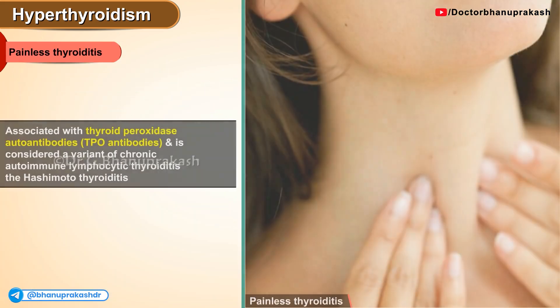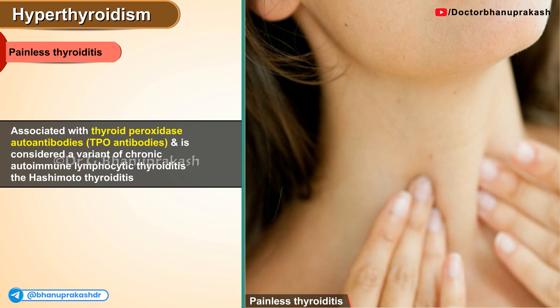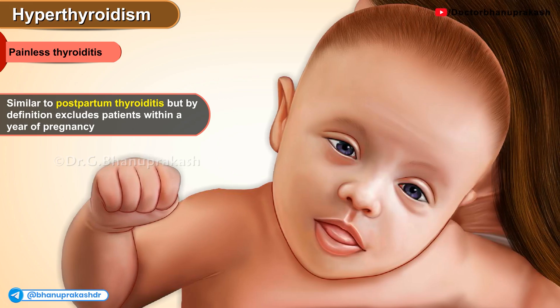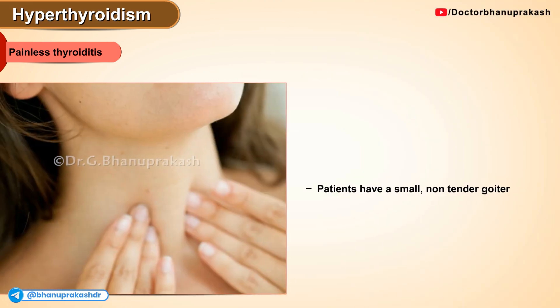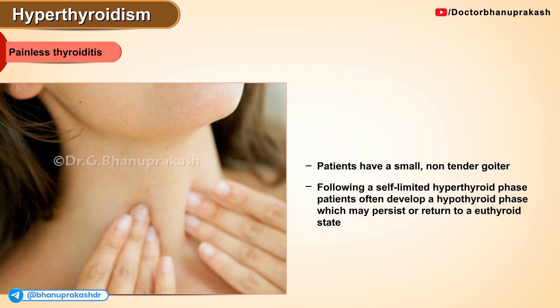Painless thyroiditis is associated with thyroid peroxidase autoantibodies and is considered a variant of chronic autoimmune lymphocytic thyroiditis, the Hashimoto's thyroiditis. It is similar to postpartum thyroiditis but by definition excludes patients within a year of pregnancy. Patients may have a small non-tender goiter and it usually follows a self-limited hyperthyroid phase, where patients often develop a hypothyroid phase later on which may persist or may return to a euthyroid state, just like that in subacute de Quervain's thyroiditis.